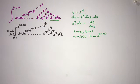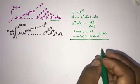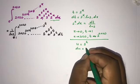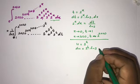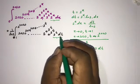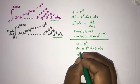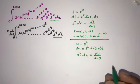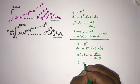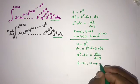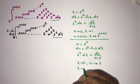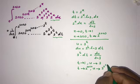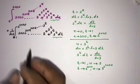Again we apply the substitution method. Let u equal 3 to the t. Differentiating, du equals 3 to the t times natural log of 3, dt. So 3 to the t dt equals du over natural log of 3. For the lower limit, when t approaches 1, u approaches 3. For the upper limit, when t approaches 2 to the 2020, u approaches 3 to the 2 to the 2020.